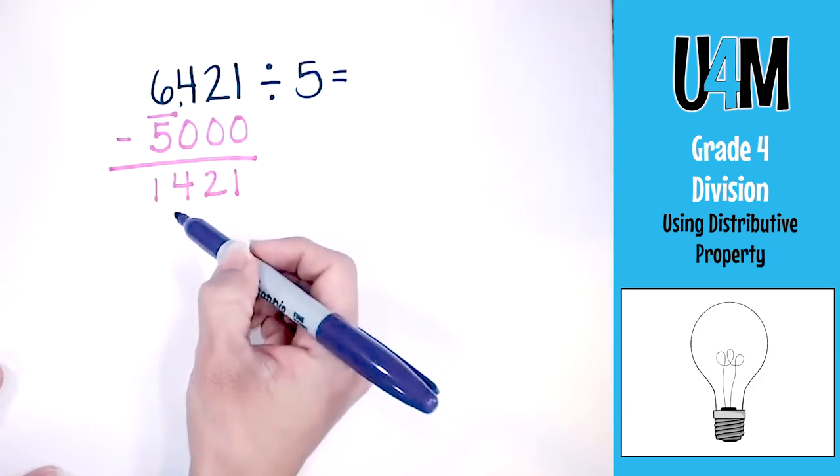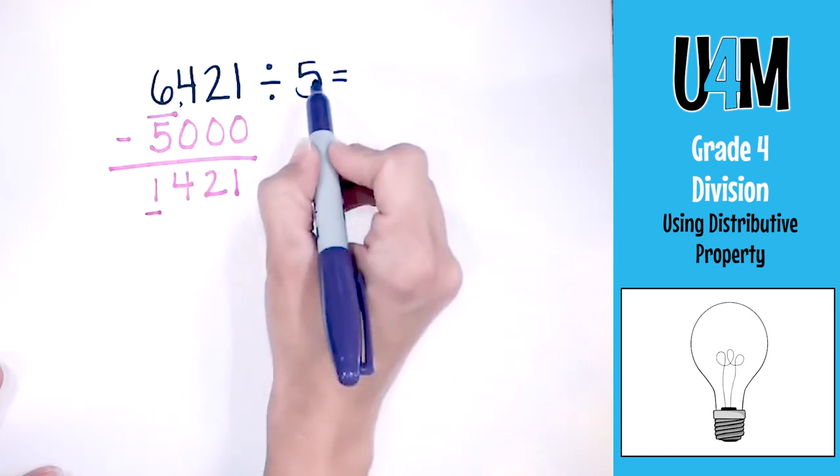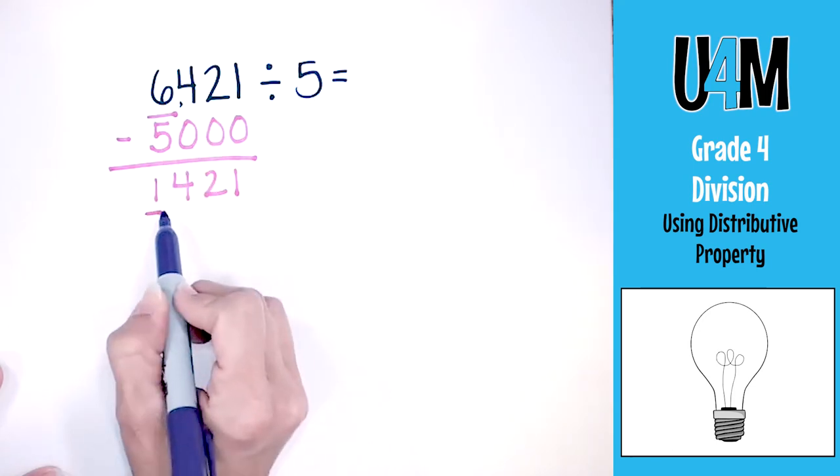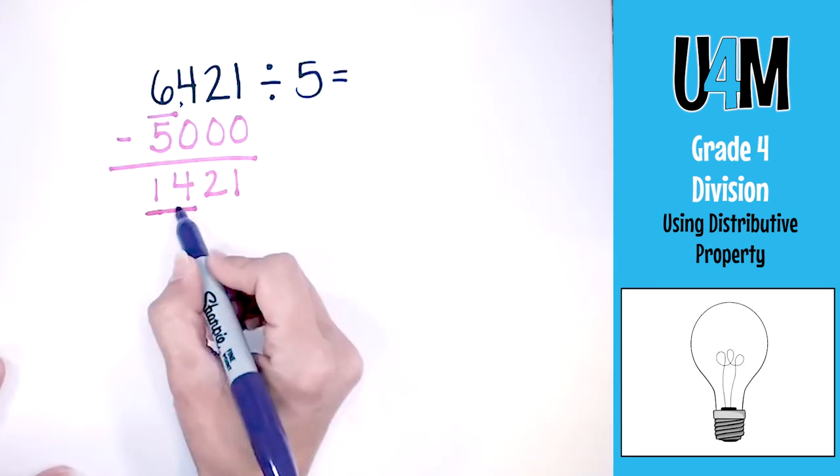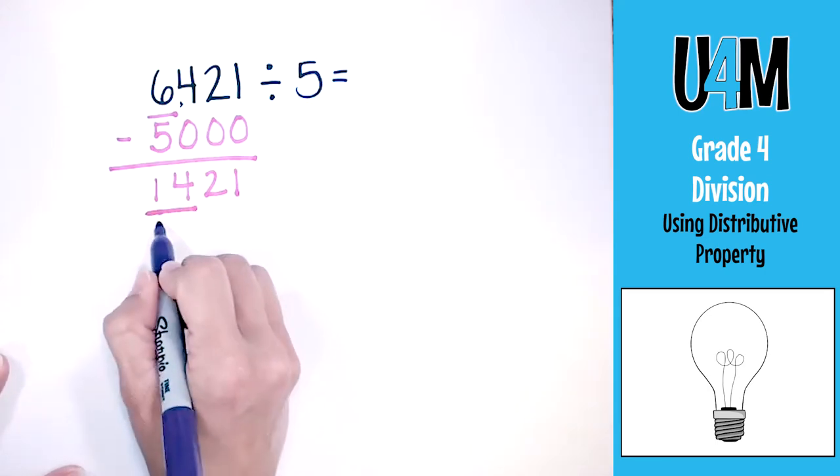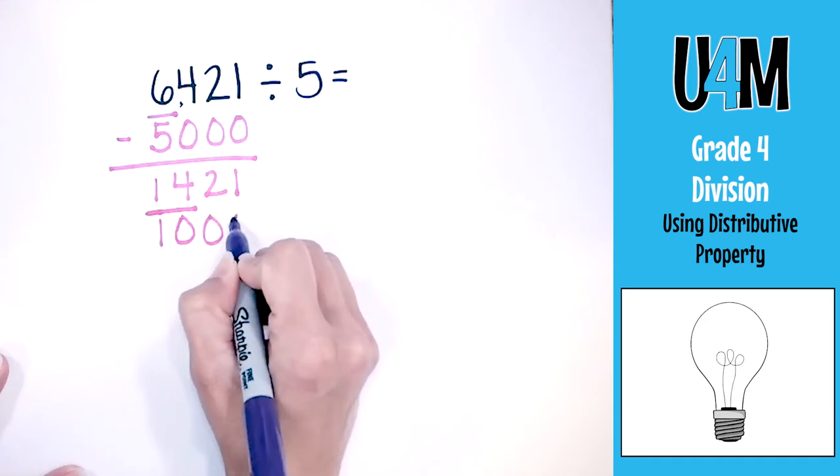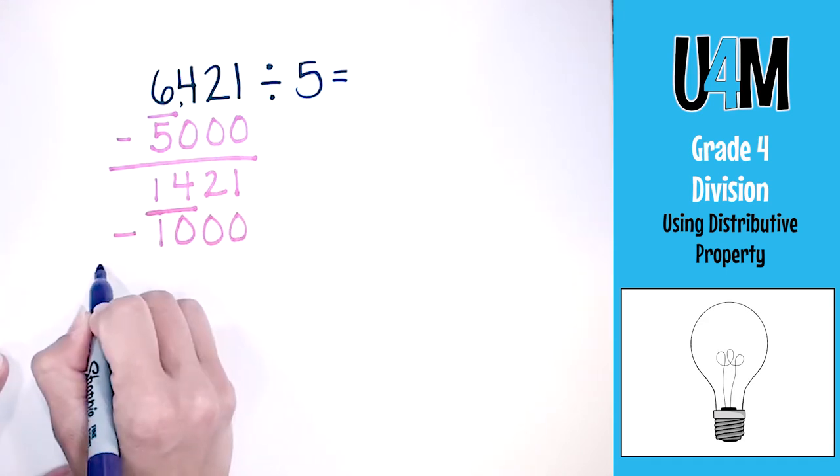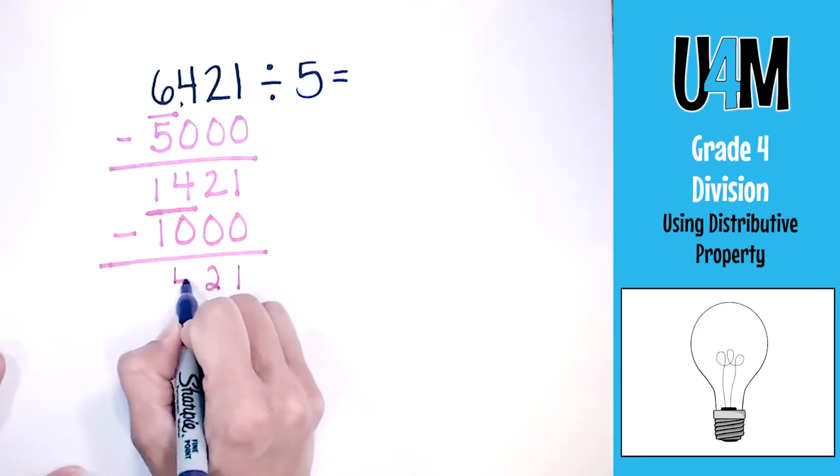Now I have to find the closest multiple again. In this case, we have a 1 here and 5 is larger than 1, so we're going to have to look at 14. The closest multiple to 14 would be 10. So we're going to put a 10 here and then fill in the gaps with zeros as placeholders. We're going to subtract again, and this will give us 421.